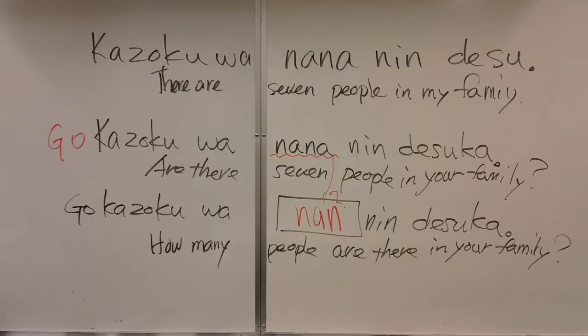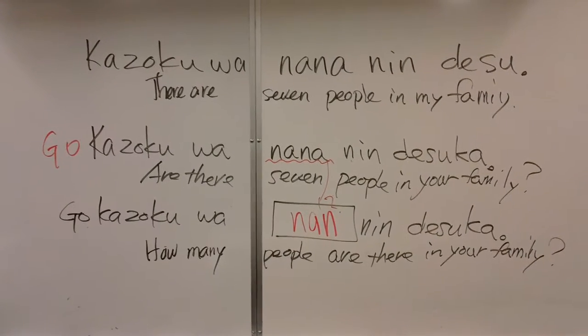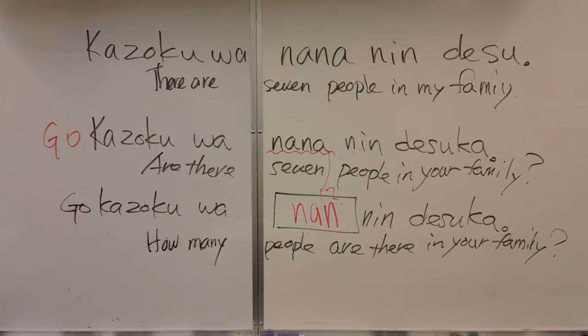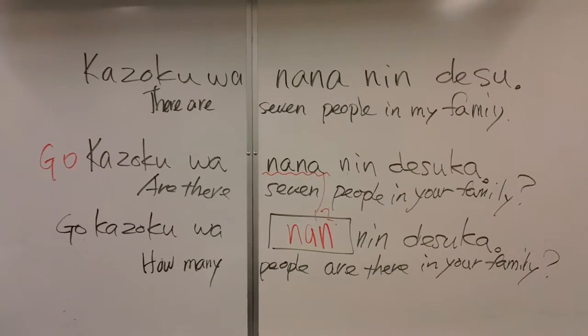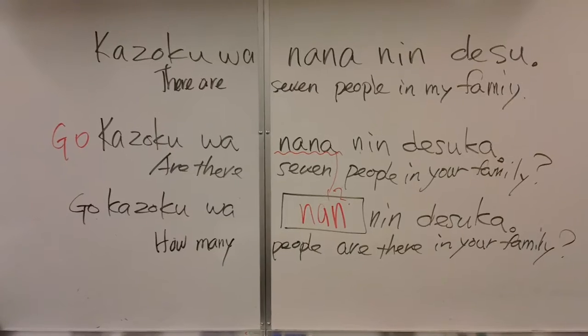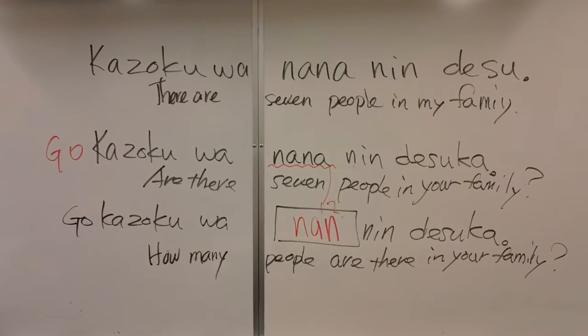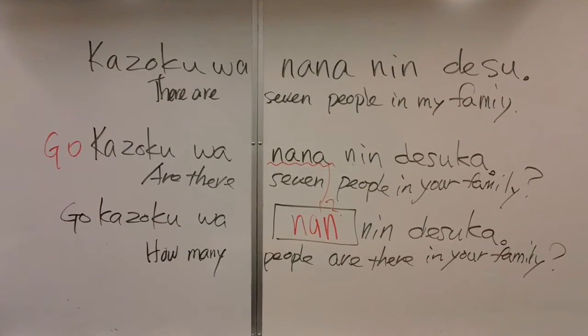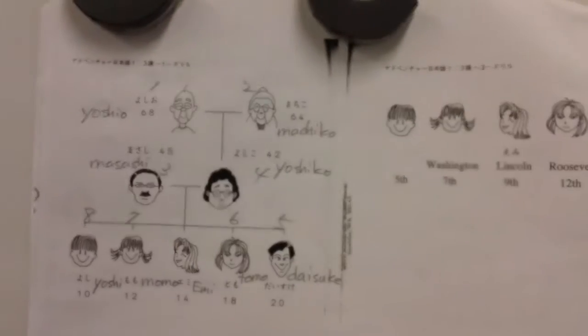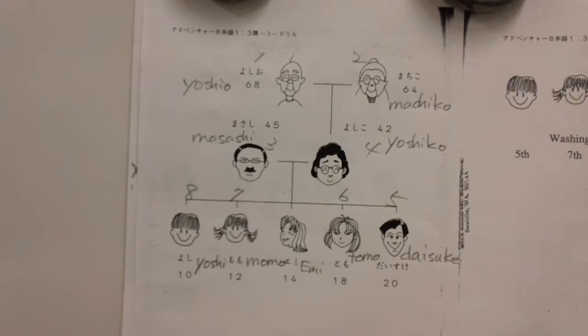When you don't know the number, replace 七人 with 何人. ご家族は何人ですか? — ask how many people. So go back to the textbook one more time.